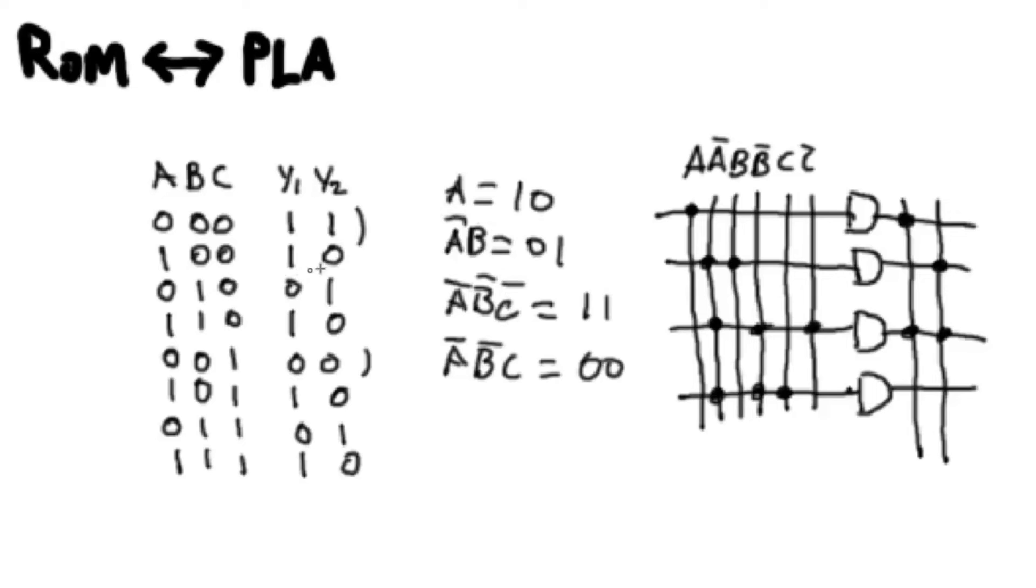Now, I should also mention that any PLA, because a PLA will always go through its combinations and produce a particular output, any PLA can translate into a ROM. But not every ROM can translate into a PLA. Sometimes you get ROMs that are just so random that you cannot translate them into a PLA. They simply must be created as ROMs. But sometimes you can get these instances where ROMs can be turned into PLAs.